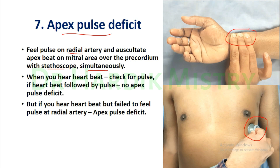Here you have to feel for the Radial Pulse while simultaneously hearing the Heartbeats. When you hear a Heartbeat, check for the Pulse. If the Heartbeat is followed by a Pulse, there will be no Apex Pulse Deficit — Heartbeat and Pulse, Heartbeat and Pulse. If you feel both, there is no Apex Pulse Deficit.